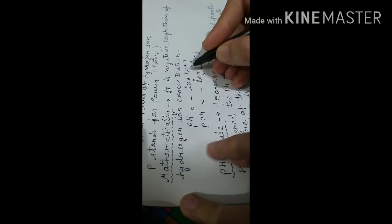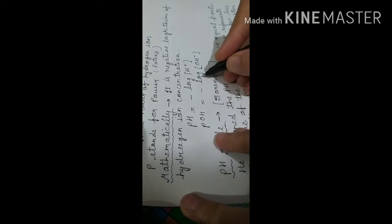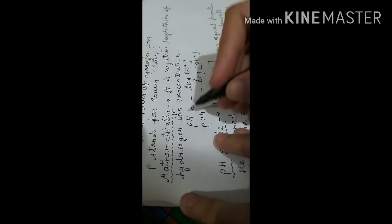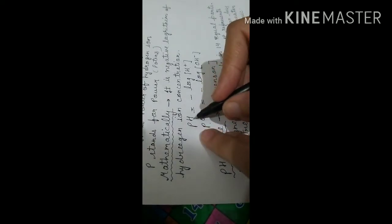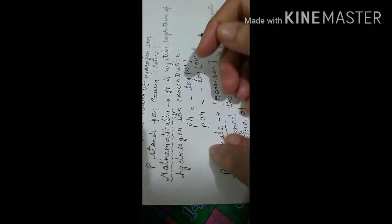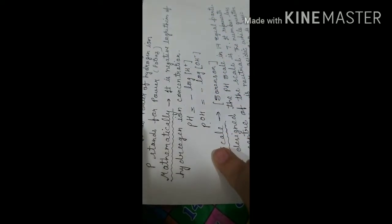So pH is written as: pH equals negative logarithm of H⁺ ion concentration. And if we have to find pOH, then it is the negative logarithm of OH⁻ ion concentration. The numericals related to pH = -log[H⁺] will be solved in the next lecture.